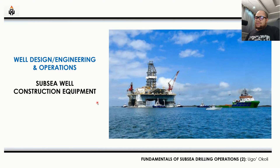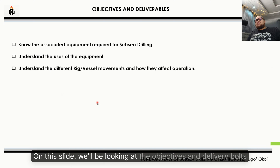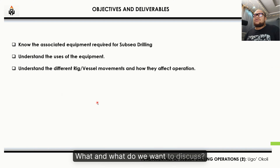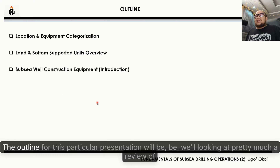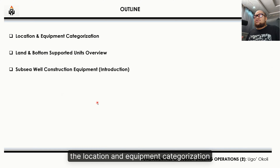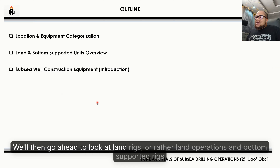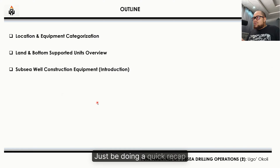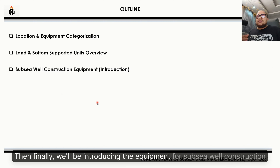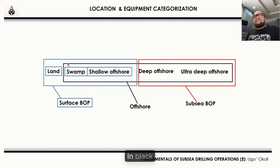Moving right into it — on this slide we'll be looking at the objectives and deliverables. We want to know the associated equipment required for drilling subsea and understand the uses of this particular equipment. The outline for this presentation will cover a review of location and equipment categorization, then land operations and bottom-supported rigs — noting their similarities — and finally we'll be introducing the equipment for subsea well construction.